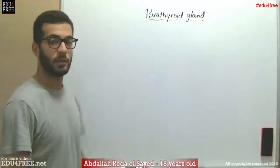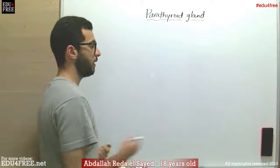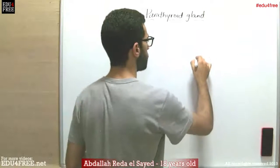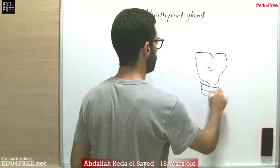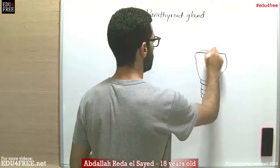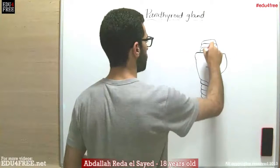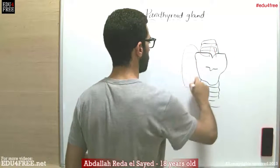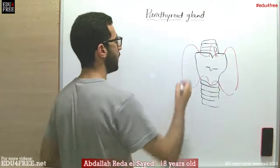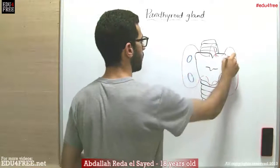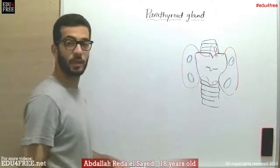Today we are going to talk about the parathyroid gland. The parathyroid gland consists of four associated glands that are related to the thyroid gland. So if we assume that this is the thyroid gland, this is the trachea, and the thyroid gland is here. So the parathyroid glands will be here. So they are four associated glands to the thyroid gland.